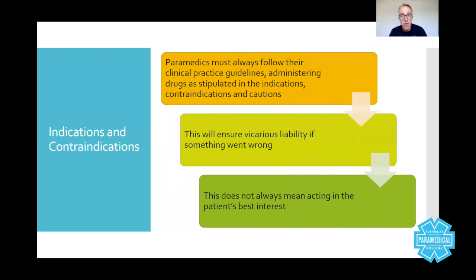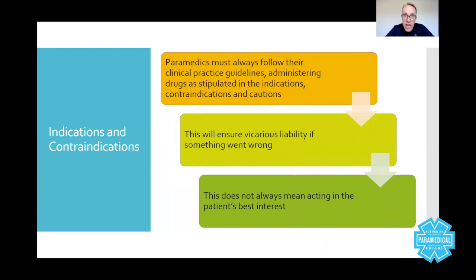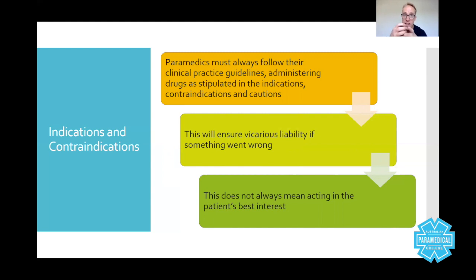Indications and contraindications allow you to recognize when your ambulance service indicates use of a drug. Comparing ambulance service protocols between states, one might say you can give IM adrenaline for asthma, another might say only intensive care paramedics can do that. They're always slightly different, but regardless, you have to follow your own clinical practice guidelines. Even if you know life-threatening asthma is treated with intramuscular adrenaline, if you're not allowed to give it in your scope of practice, then you cannot give it.